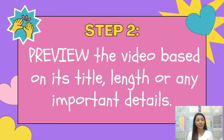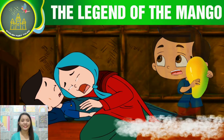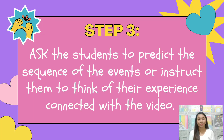Step 2: Preview the video based on its title, length, or any important details. This is the animated video that we are going to watch. It is about the Legend of the Mango, sourced from YouTube, and it will not take more than 6 minutes. Step 3: Ask students to predict the sequence of events or think of experiences connected with the video.